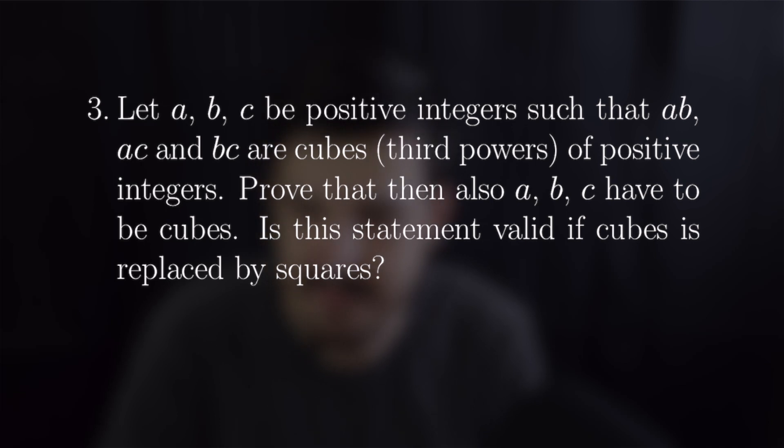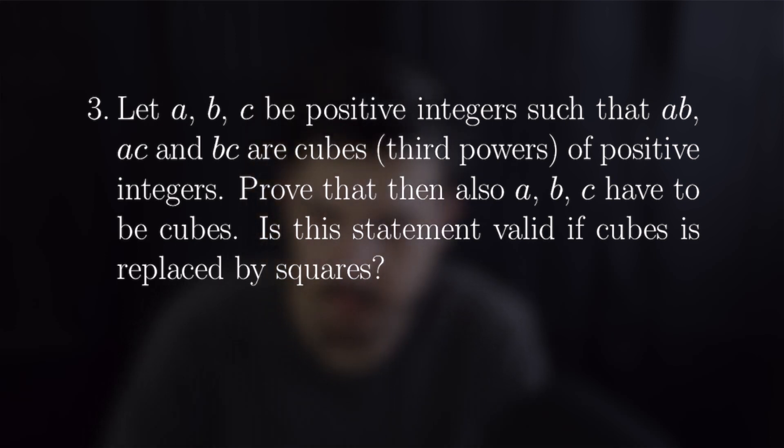Our third example says let a, b and c be positive integers such that ab, ac and bc are cubes and we want to prove that a, b and c also have to be cubes as well as see if this statement is valid if cubes are replaced by squares.